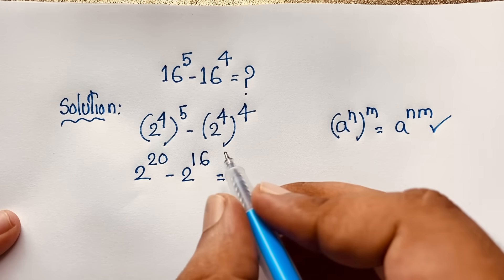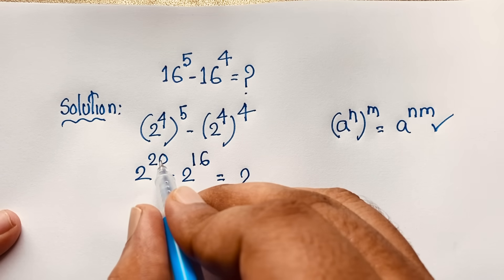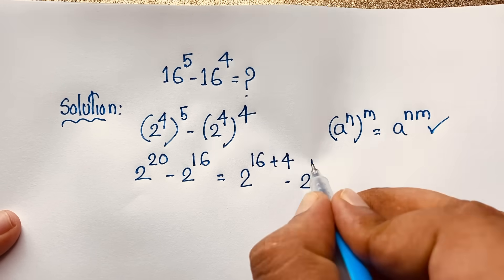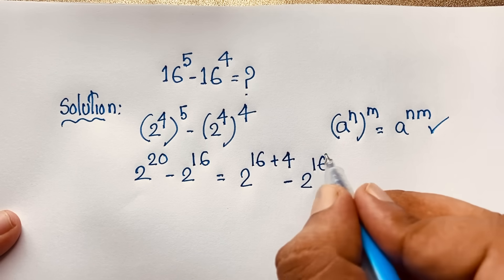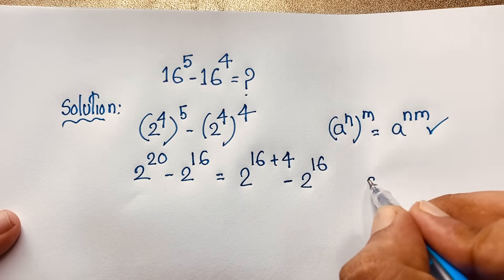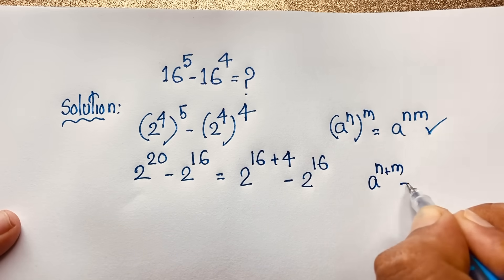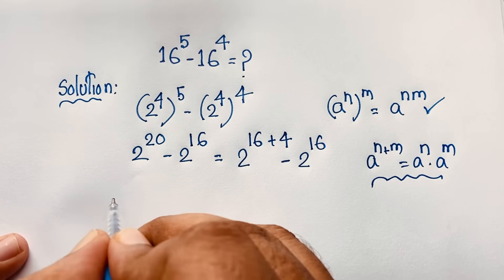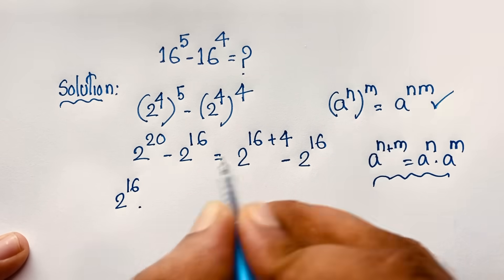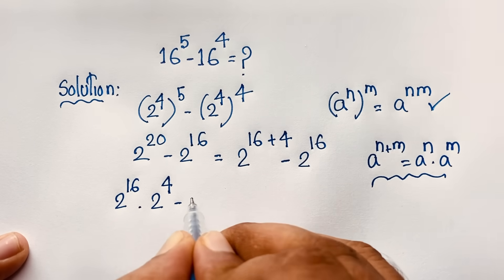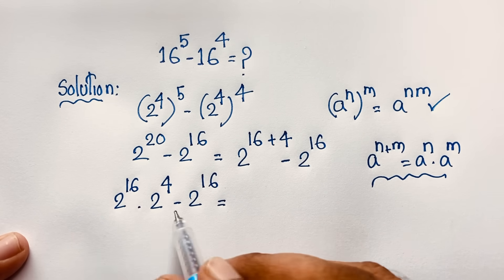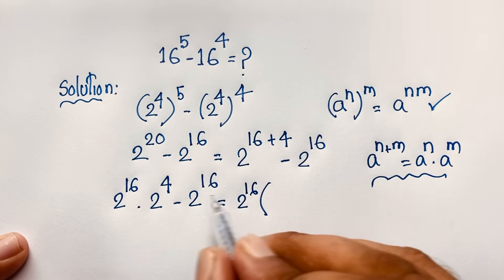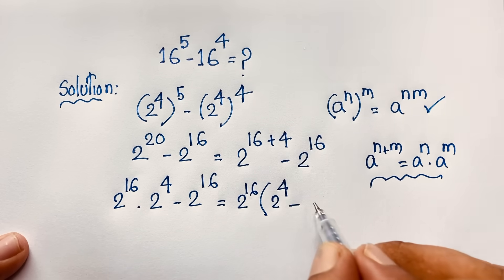Now we have 2 to the power 20 minus 2 to the power 16. We can rewrite 2 to the power 20 as 2 to the power 16 plus 4. Applying the exponential formula a to the power n plus m equals a to the power n times a to the power m, this becomes 2 to the power 16 times 2 to the power 4 minus 2 to the power 16. Now 2 to the power 16 is common, so factoring it out gives 2 to the power 16 times the quantity 2 to the power 4 minus 1.